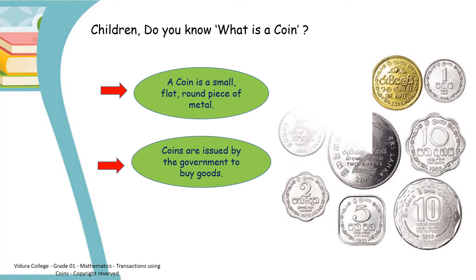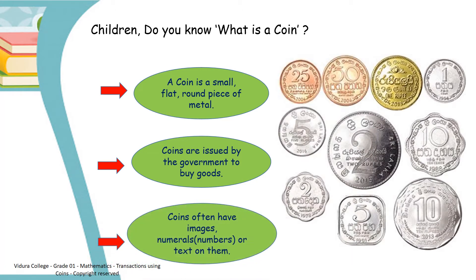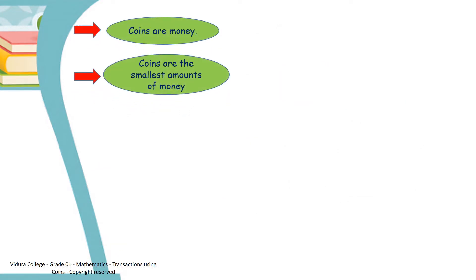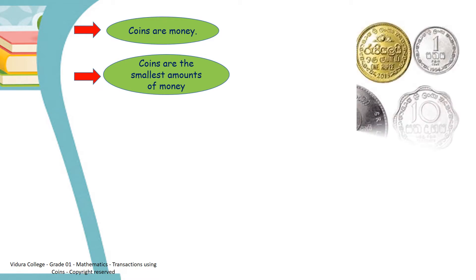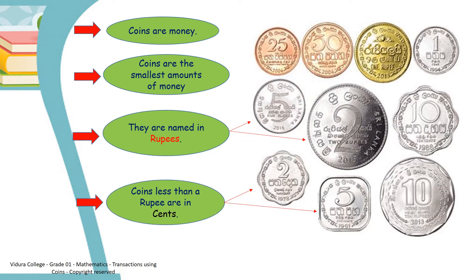Here, look at these coins. Do you know, coins often have images, numerals that mean numbers, or text on them. Coins are money. Coins are the smallest amounts of money. They are named in rupees. Coins less than a rupee are in cents.